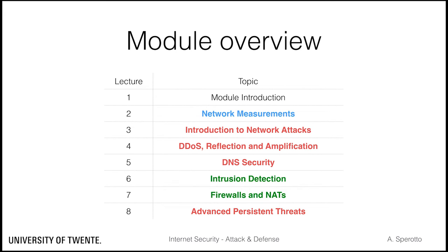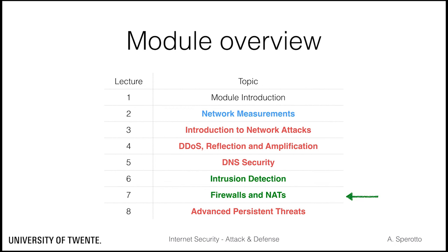The module is organized as follows. After the introductory week, we will have seven weeks of lectures. We will start with an introduction to network measurements, with the goal of providing an overview of the topic and familiarizing you with trace analysis. After that, we will dive into a set of attacks — first, an overview of attacks such as scans, worms, and botnets. Then in weeks 4 and 5, we will talk about denial of service attacks and DNS security. In weeks 6 and 7, we will focus on defense by looking at intrusion detection, firewalls, and NATs. Finally, we will conclude this course with a lecture on advanced persistent threats.